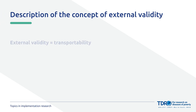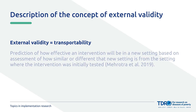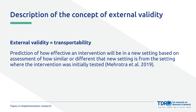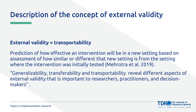Transportability gives us tools to do this in a more formal way. First, it helps us figure out if the findings from one setting can be used to make accurate estimates in another setting. Then, if it can, transportability helps us predict what would have happened if the study had been done in that new place instead. It's similar to transferability, but transportability gives us tools to do this in a more formal, mathematical way — using the data we have, we can actually quantify how much the intervention would work in the new place by looking at differences between the people in the original study and the people in the new context.